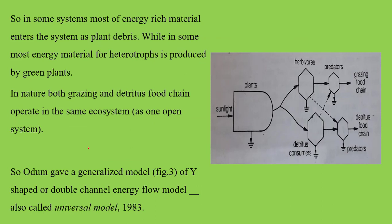In nature, when there are two food chains operating, in some systems most of the energy that enters the system comes as plant debris. In some systems most energy for heterotrophs is produced by the green plants. So these two types of food chains — the grazing type and the detritus food chain — are combined in one common system. For example: plant → herbivore → predator, this way energy is flowing in the grazing chain.